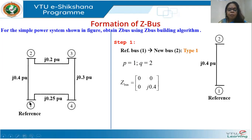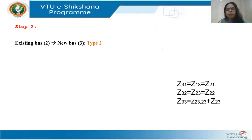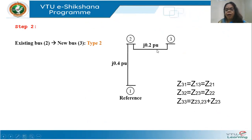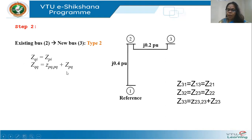In a practical system, the ground is bus zero, and you start numbering from 1, 2, 3, 4. When we talk of an N-bus system, it does not include the ground — it is actually N plus ground. This partial network Z-bus is now set. Next, I will add the next branch between buses 2 and 3. Bus 2 is already existing and is not a reference bus, and bus 3 is the new node being added — this is of type 2: a branch between an existing bus and a new bus. The equations are: Z_QI = Z_PI and Z_QQ = Z_PP + z_PQ.